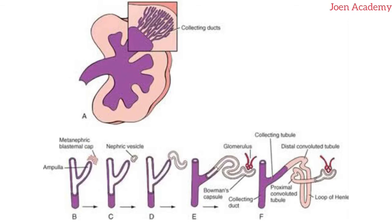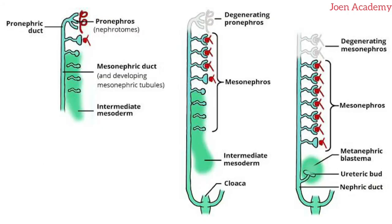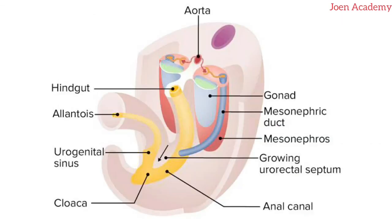The part of the mesonephric duct that is caudal to the origin of the ureteric bud is absorbed into the vesicouterine canal so that the metanephric duct and the ureteric bud open separately into the urinary bladder.